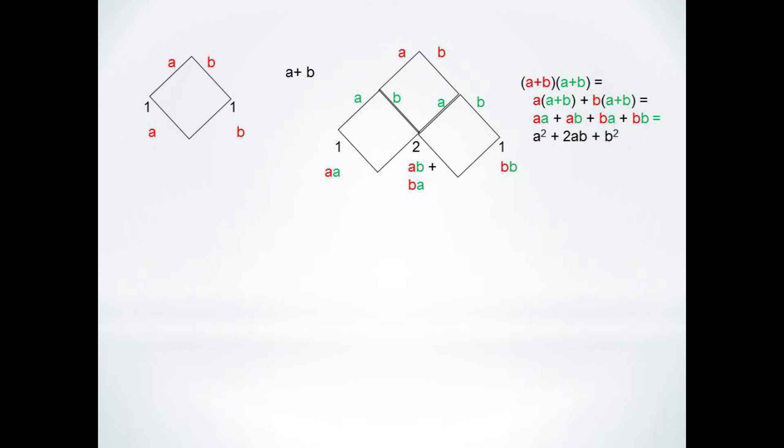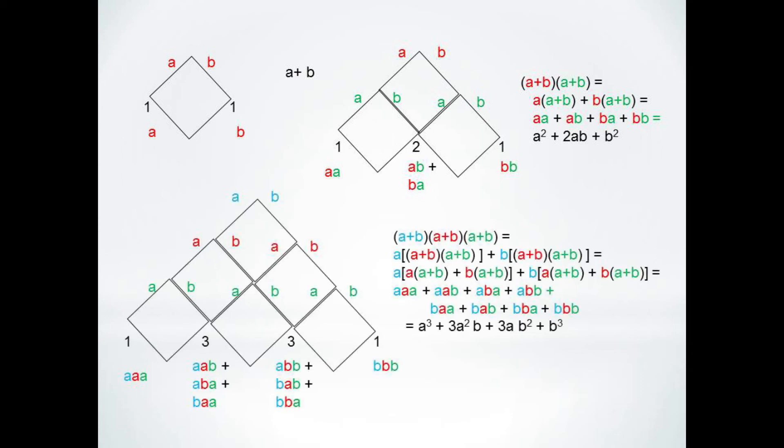So we can choose a and a to give us our first term with two a's. We can use a and b or b and a giving us two terms with ab, and of course one term with b times b.